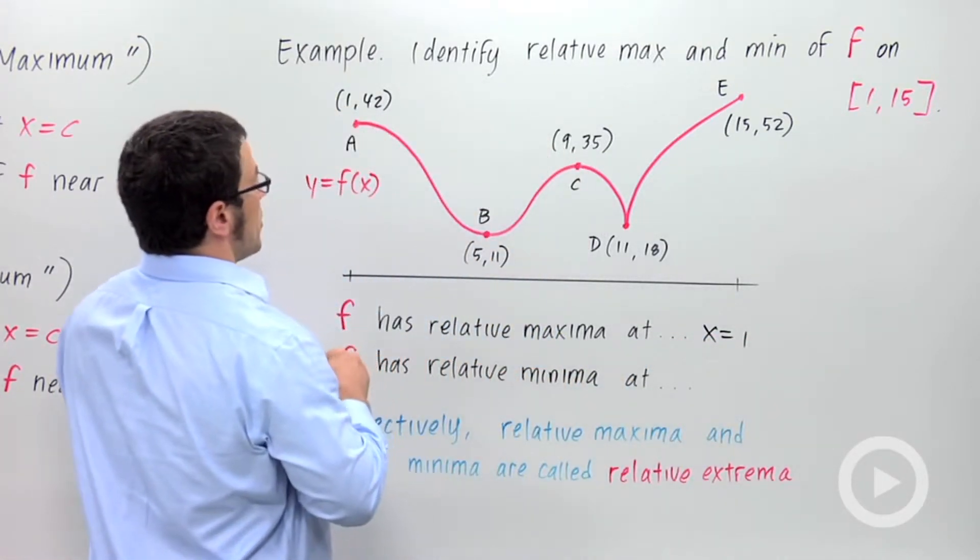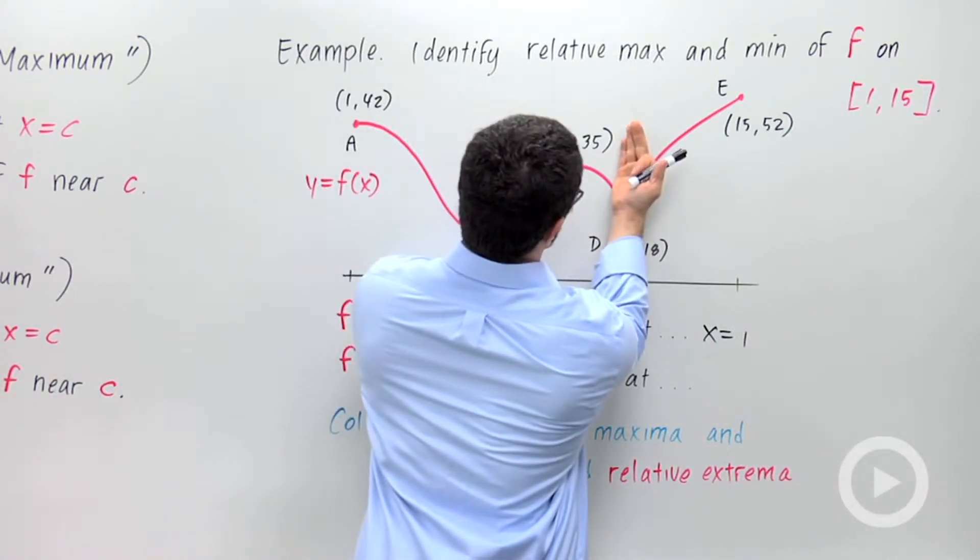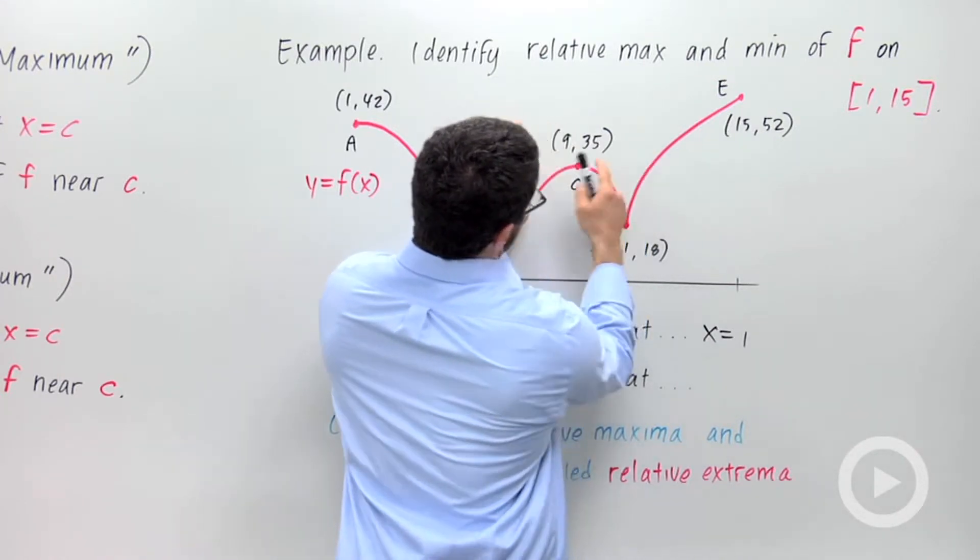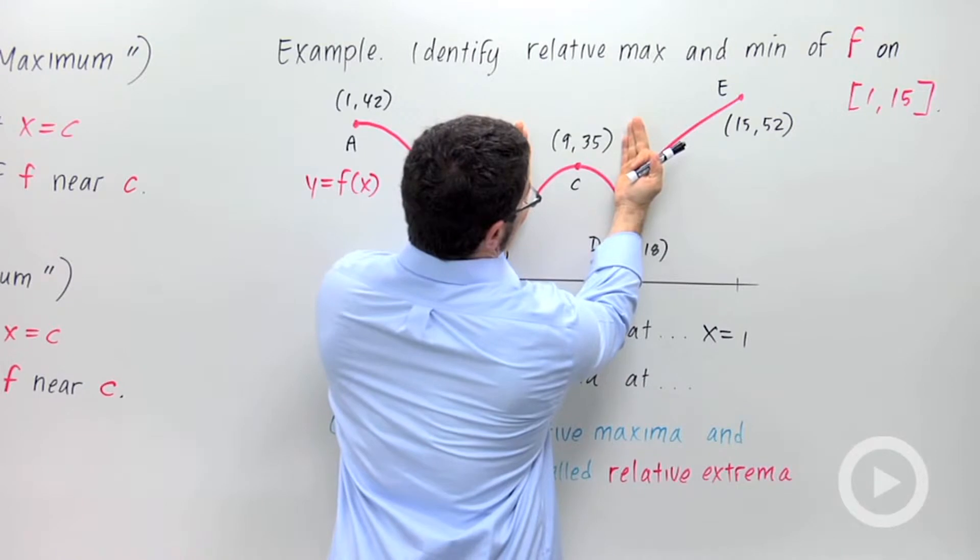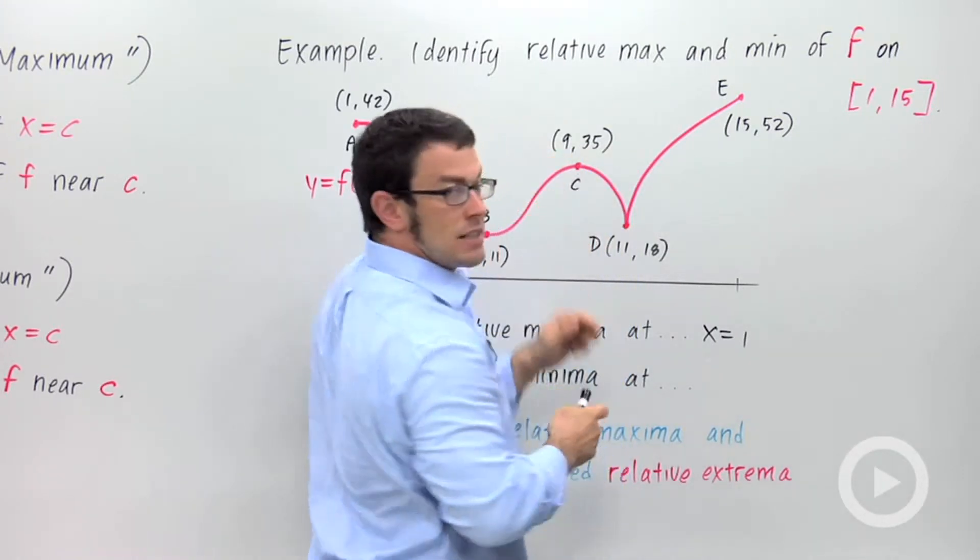And we can similarly go through and look for the other relative maxima. There's one right here. Just cover the rest of the graph with your hands and notice that in this little interval here, 35 is the highest point, right? 35 is the highest value that the function takes on. And so there's a relative maximum at x equals 9.